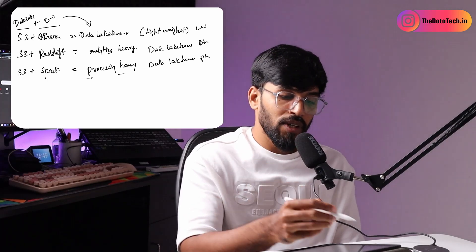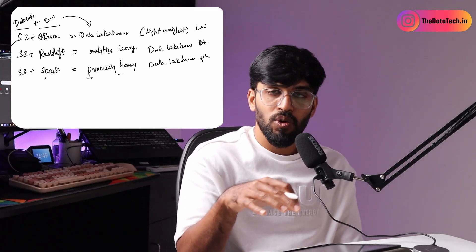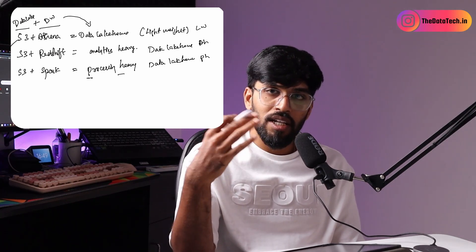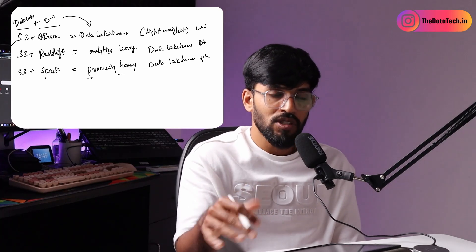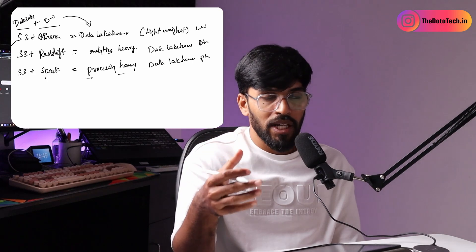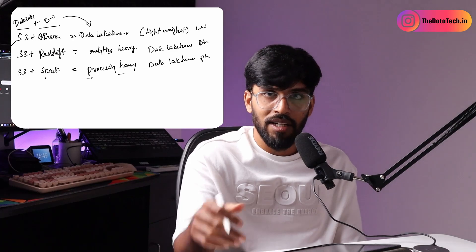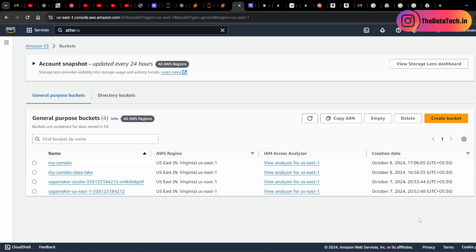We'll be loading data into S3 and then querying that S3 data using Athena, running some queries on top of it. I'm going to use food delivery app data, like Zomato. I already created a CSV file with that. So I've logged into my AWS console and I'm in the S3 service. S3 is an object store where you can upload any type of data — structured, semi-structured, unstructured, JSON, CSV, audio, video — anything. It's like your local file system but as distributed object storage.